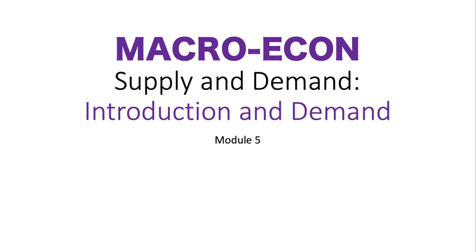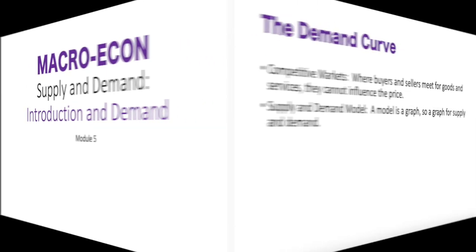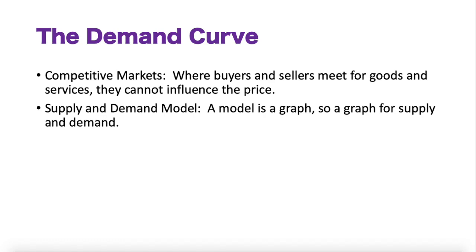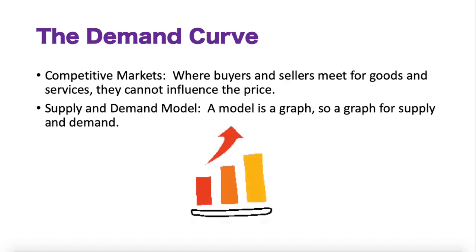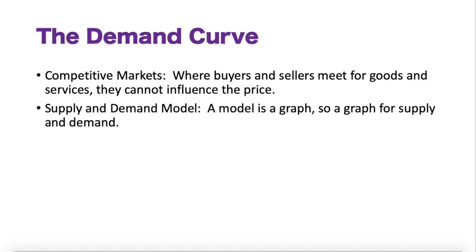We need to jump into the demand curve. Competitive markets — this is where buyers and sellers meet for goods and services. They cannot influence the price. Now, the supply and demand model. When we see 'model' in economics, we're generally referring to a graph, so here we're talking about a supply and demand graph.